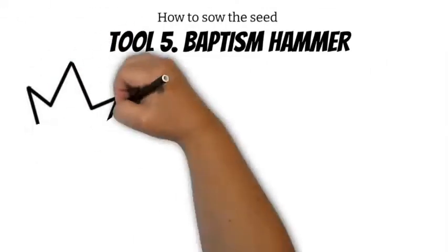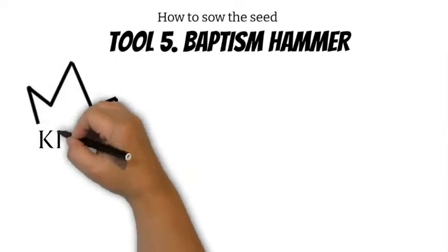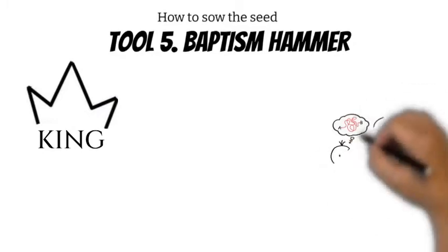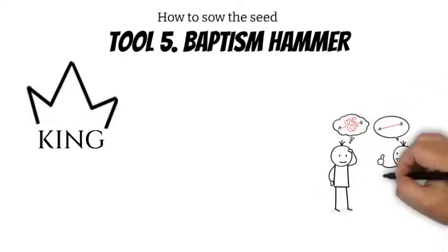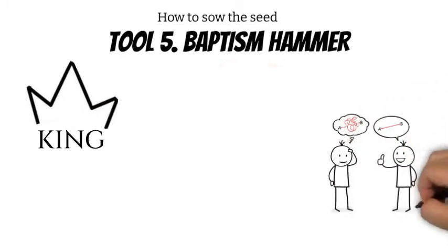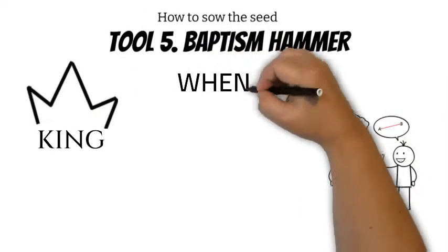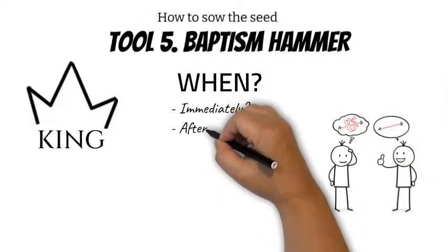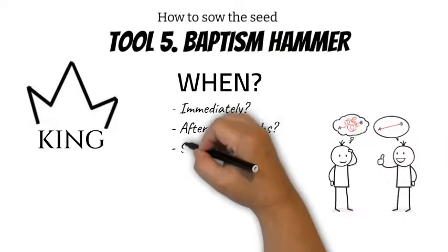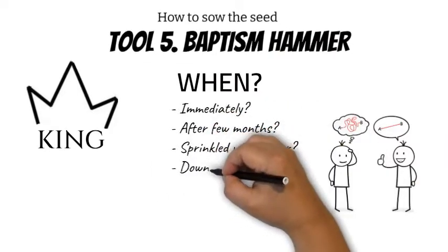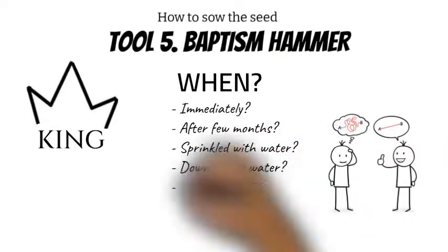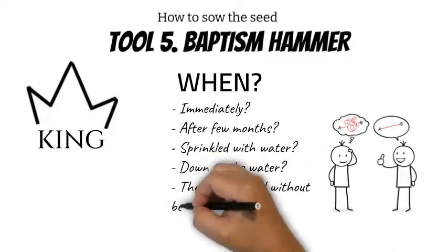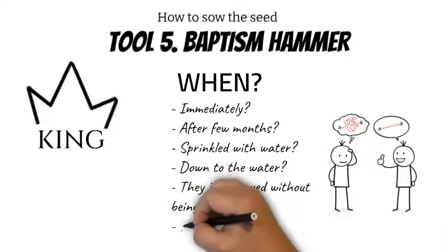Remember, you are training in how people in the Bible made Jesus the king of their life. Therefore, in the column of 'when,' ask them to discover if they were baptized immediately or after a few months, if they were sprinkled with water or if they went down to the water, or if they just prayed without being baptized, or baptized immediately.